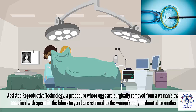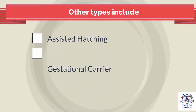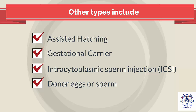Assisted reproductive technology involves surgically removing eggs from a woman's ovaries, combining them with sperm in the laboratory, and returning them to the woman's body or donating them to another woman. The most common type is in vitro fertilization (IVF). Other types include assisted hatching, gestational carrier, intracytoplasmic sperm injection (ICSI), and the use of donor eggs or sperm.